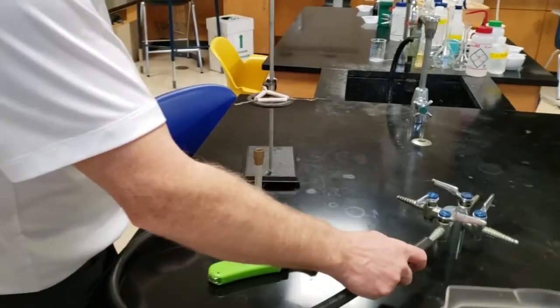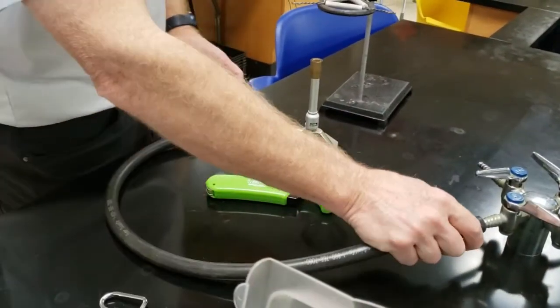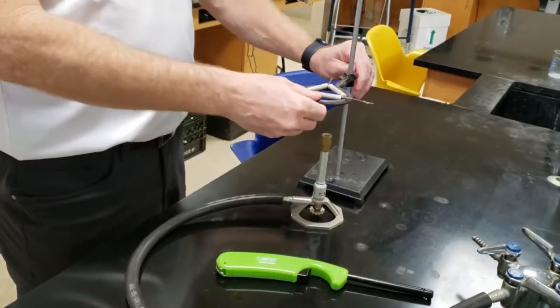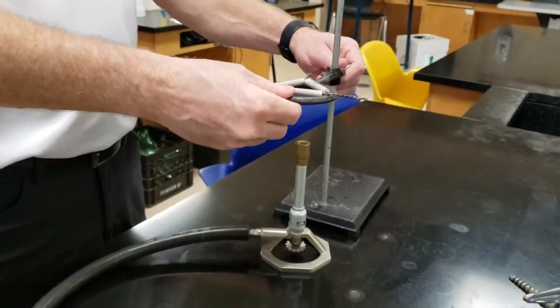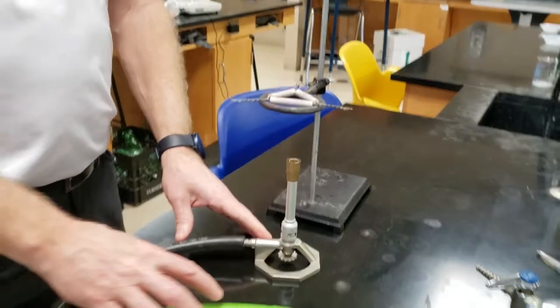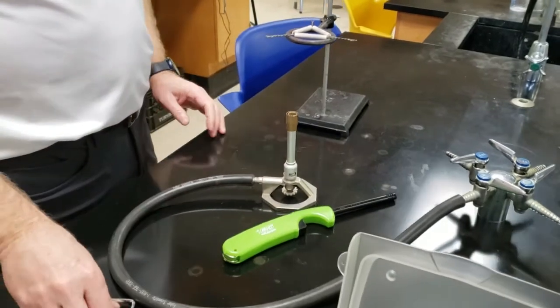We're going to put the Bunsen burner into the gas nozzle nice and tight. We want to adjust the ring so that it's the right height. You don't want to do it later because it's going to be hot. So picture the flame and how tall it's going to be and you don't want too close. You don't want too far.